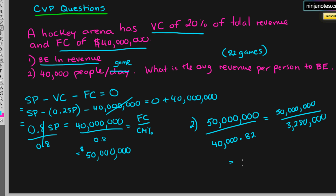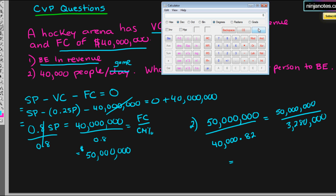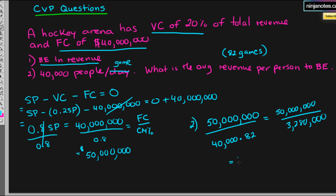So $50 million divided by 3,280,000 equals $15.24 of revenue per person needed for this hockey arena to break even and recover their fixed costs.